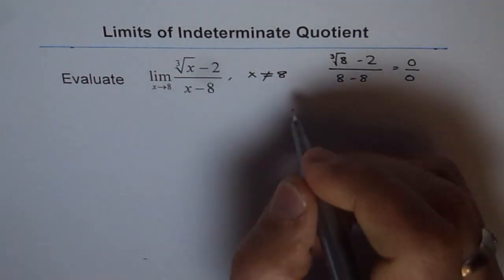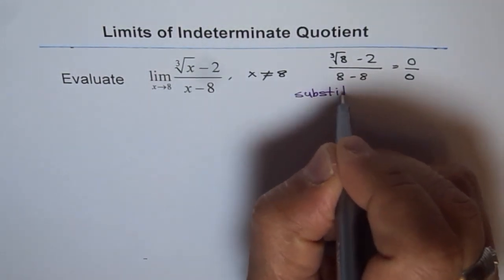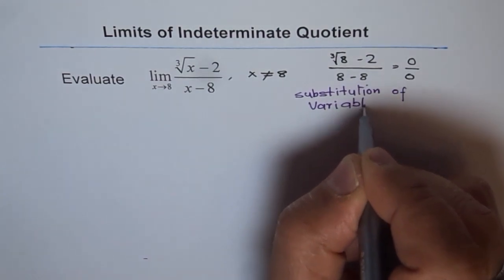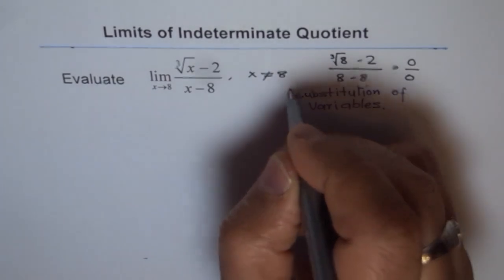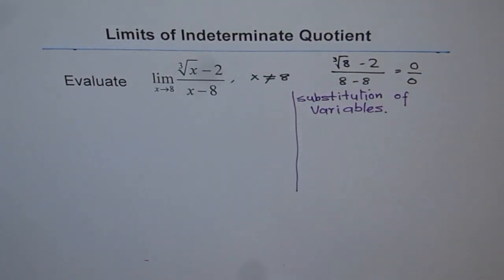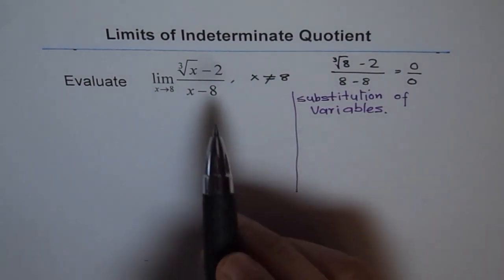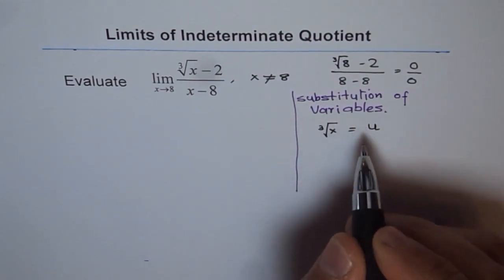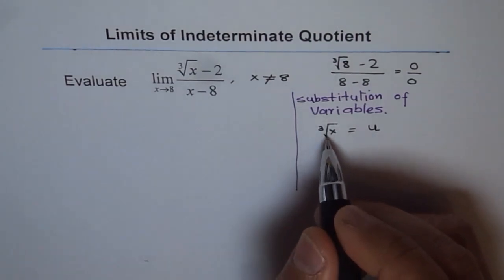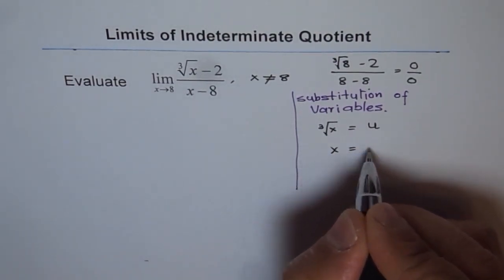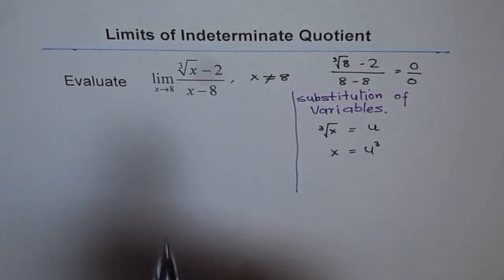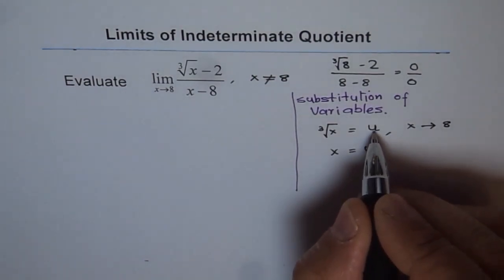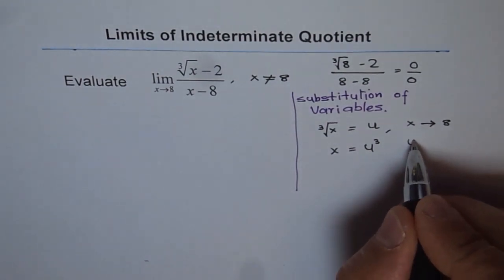Substitution of variable is something which you'll love — see how we do it. The technique here is substitution of variables. This radical is cube root of x. We will substitute a variable, let's say u, for cube root of x. If cube root of x is u, then x should be u cubed. Now, when x approaches 8, cube root of 8 is 2, so u approaches 2.